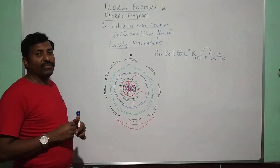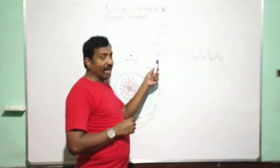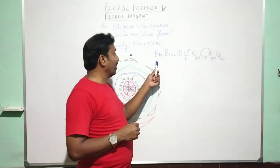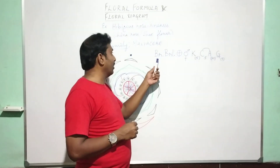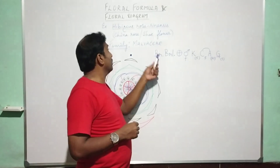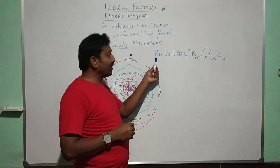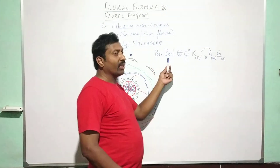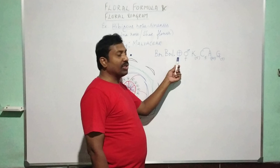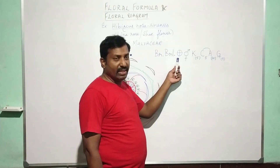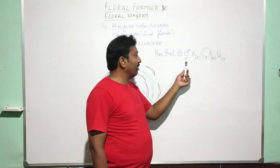Hibiscus flower has a bract, so we will represent it in a symbolic manner. The floral formula shows it is bractiate, bractiolate, actinomorphic — that is radially symmetrical — and bisexual.